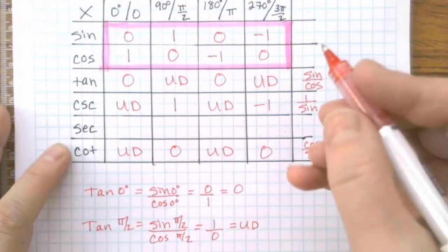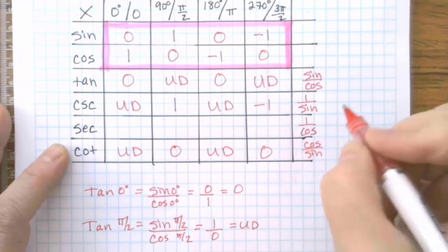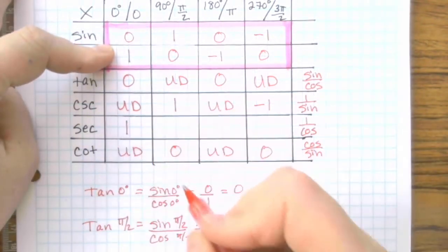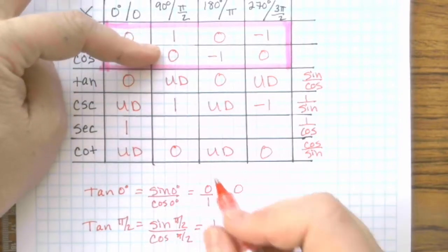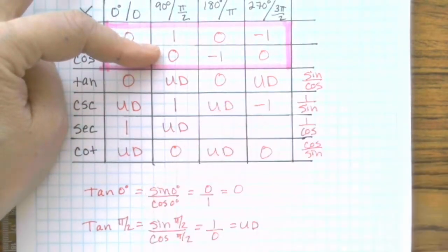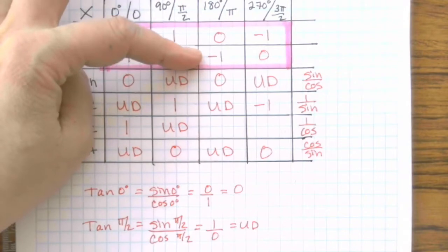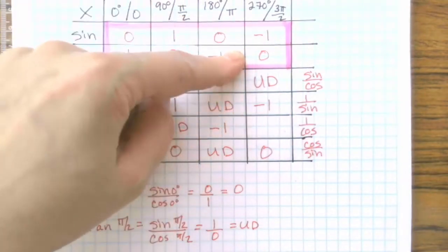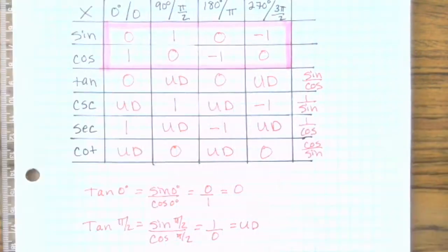You can do the same with secant. It's 1 over cosine. So cosine of 0 is 1, you flip it, it's 1. Cosine of 90 is 0, you flip it, it's undefined. Cosine of 180 is negative 1, you flip it, it's negative 1. And cosine of 270 is 0, you flip it, you are undefined.